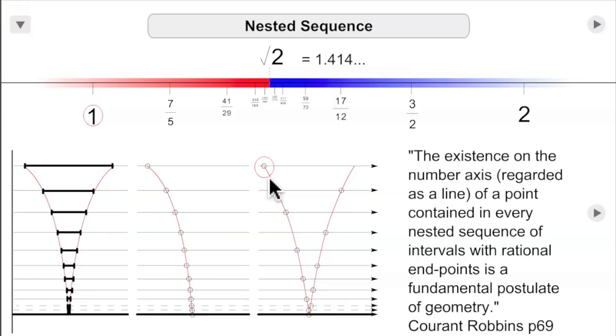Continued fraction as a nested sequence of intervals leading to a point on the number line, which we'll call an irrational number. Works something like this. Then it goes on forever.